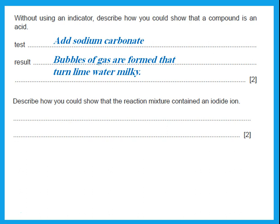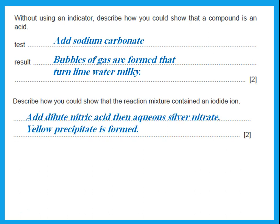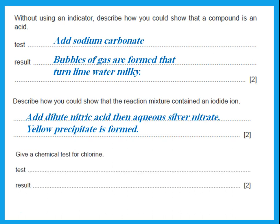Describe how you could show that the reaction mixture contained iodide ions. The test for iodide: add dilute nitric acid and silver nitrate solution — iodide gives a yellow precipitate.